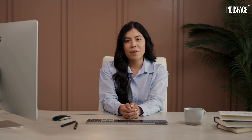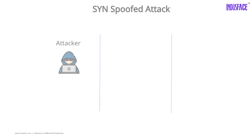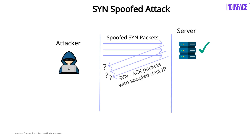A direct attack uses the attacker's own IP, making it easier to detect. A SYN spoofed attack uses fake IPs, making it harder to trace.